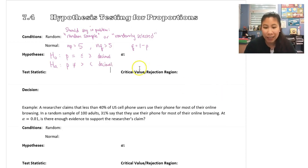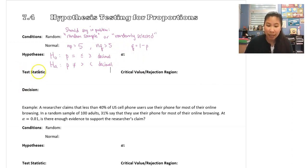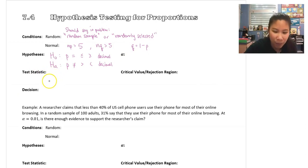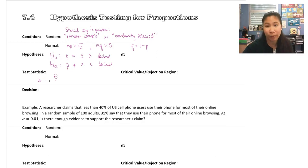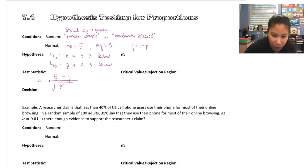Alpha is the same as usual — whatever they give you in the problem, that's what alpha is. For the test statistic, there's a new formula. We go back to a z-score, which means we're using the normal curve table again. The formula looks like this: it's p-hat minus p, divided by the square root of p times q all over n.